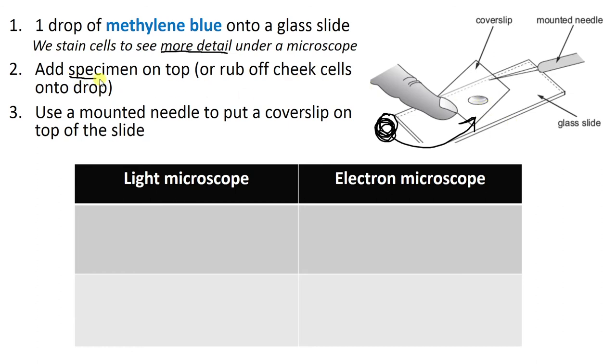So you do this first and then you can add your specimen. Specimen is just a fancy word for something you're going to look at. You add that on top of it. The way that you've done it in class is most likely to rub off your cheek cells, put them onto the slide first and then put the drop on top. But that's okay. As long as you know it roughly in this order, then it's okay. Because as long as you know that the last step is to mount this cover slip using a mounted needle, you press it down until the staining solution covers the whole cover slip. And it's that then that you put under your microscope to look at. As long as you know the rough order, it's fine.